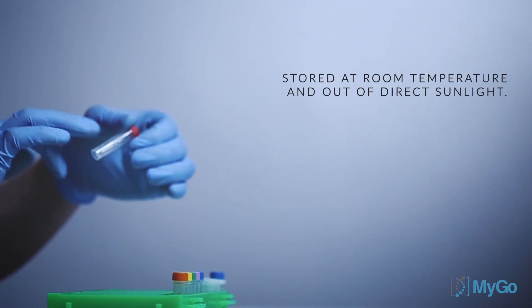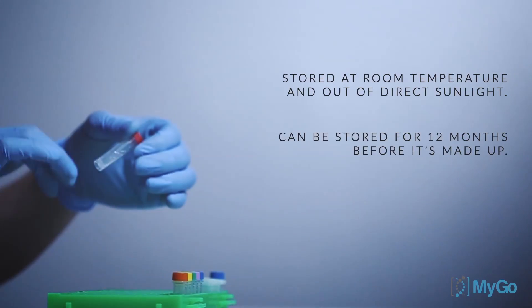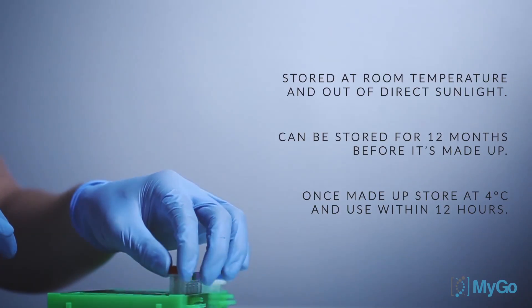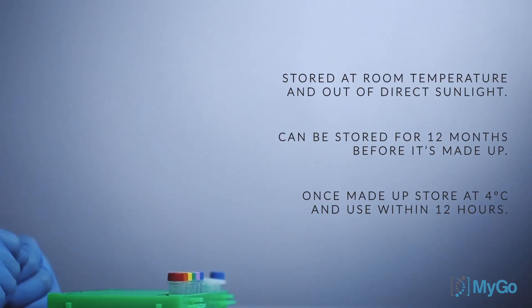The MYGO5 demo kit should be stored at room temperature and out of direct sunlight. It can be stored for 12 months before it's made up. Once the kit has been made up, store it at 4 degrees C and use within 12 hours.